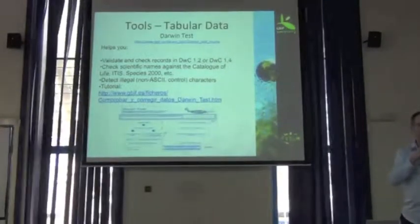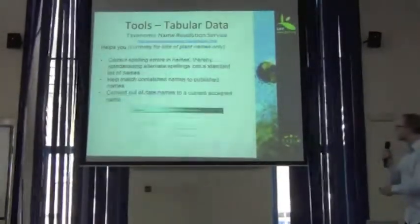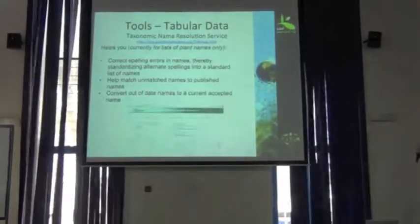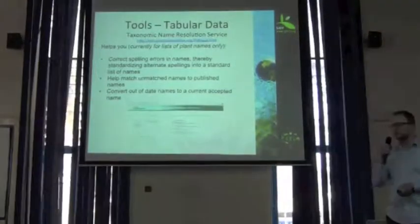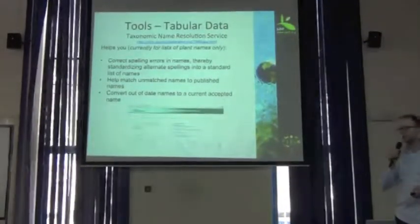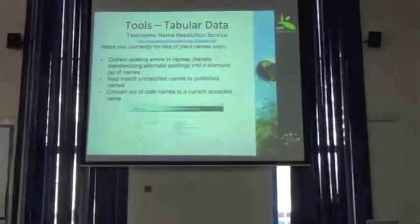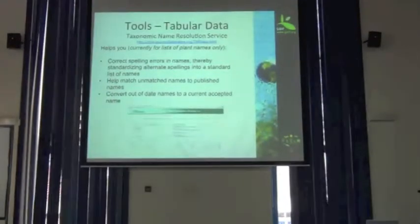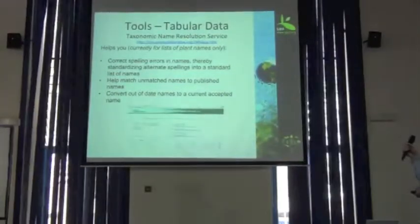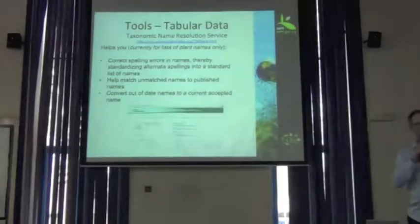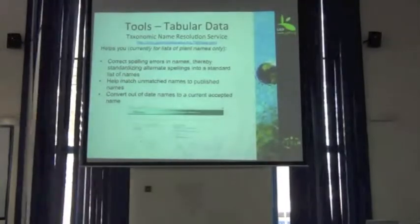I'm not going to recommend you use Darwin Test, but really for the time being it's one of the only options out there. On the taxonomic landscape, there are a lot of new tools starting to pop up. This relatively new one is called the Taxonomic Name Resolution Service, or TNRS. It currently only works with plant names. I've tried it out myself and enjoyed using it — there's going to be a little demo on this tomorrow as well. It helps you correct spelling errors in names, match unmatched names to published names in different plant checklists, and convert out-of-date names to the current accepted names.